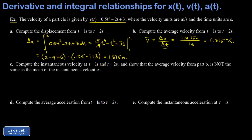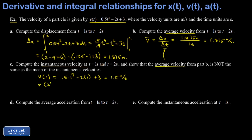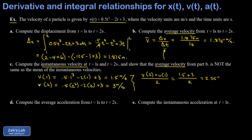In part c, we compute the instantaneous velocities at t equals one and t equals two, and show that the average velocity — displacement over time — is not the same as the arithmetic mean of those instantaneous velocities. v(1) equals 0.5 times one cubed minus two times one plus three, giving 1.5 meters per second. v(2) gives three meters per second. The arithmetic mean of these is [3 + 1.5] / 2 equals 2.25 meters per second, which does not match the average velocity of 1.875 meters per second — so that arithmetic mean doesn't have a useful physical interpretation here.